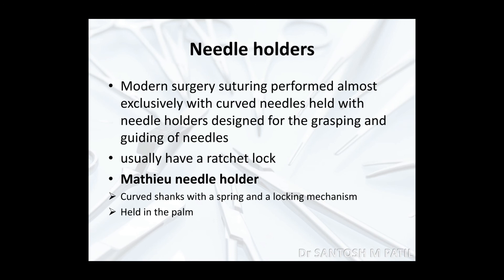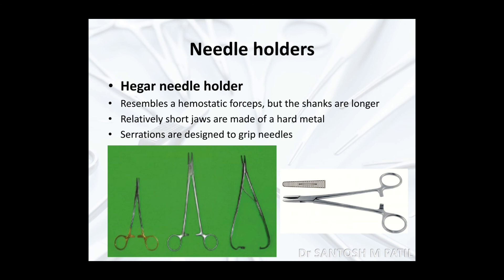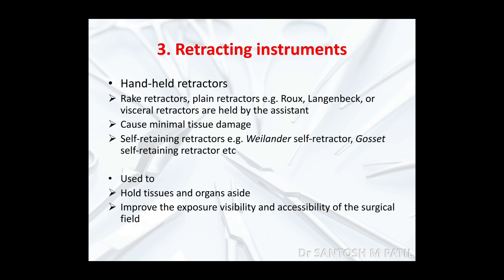Needle holders: modern surgery suturing is performed almost exclusively with curved needles held with needle holders designed for grasping and guiding needles. They usually have a ratchet lock. There are different types — the Mathieu needle holder has curved shanks with a spring and lock mechanism, held in the palm. The Hegar needle holder resembles a hemostatic forceps but has longer shanks and relatively short jaws with serrations to grip needles. Students should note the groove in the jaws as the distinguishing feature from hemostatic forceps.